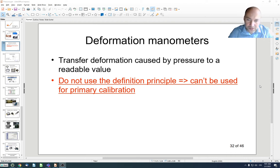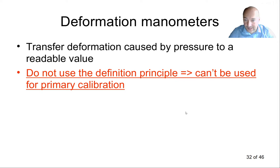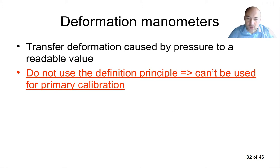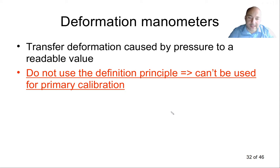In today's lecture we will be continuing in the topic of pressure sensors as we have discussed last week. Today we'll be talking about sensors for pressure that are used in industrial systems. Last week we discussed definition pressure gauges, and we have seen that if our pressure sensor uses the definition of pressure then we can use it to calibrate all other instruments. However, those instruments were used especially in labs to calibrate all other instruments.